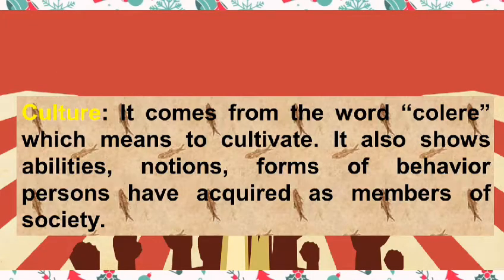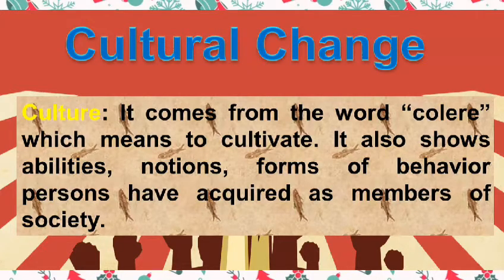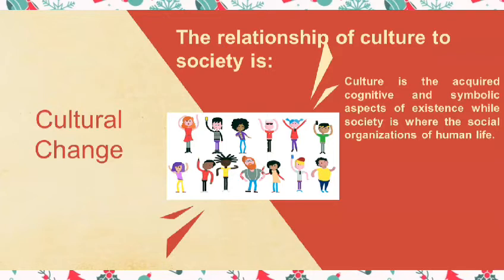Next is Cultural Change. But first, let us define culture again. Culture comes from the word 'kuliri,' which means to cultivate. It also shows the abilities, notions, and forms of behavior persons have acquired as members of society. The relationship of culture to society is that culture is the acquired cognitive and symbolic aspects of existence, while society is where the social organization of human life lies. In simple terms, the place where culture happens is what we call society, through continuous human interactions.